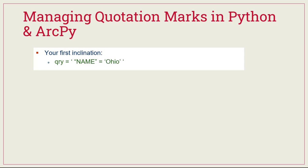So we have to talk about managing our quotation marks in Python and ArcPy. Remember back to the beginning when we were learning about the basics of Python and how it deals with quotation marks. No matter which type of quotation mark you're using, Python is always going to be looking for the pair. If you start with a single quote, it looks for the next single quote; the first double quote looks for the next double quote as its pair.